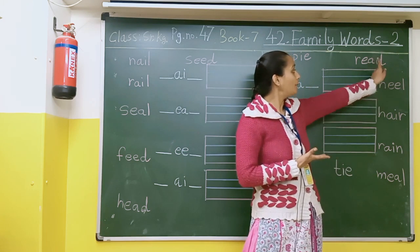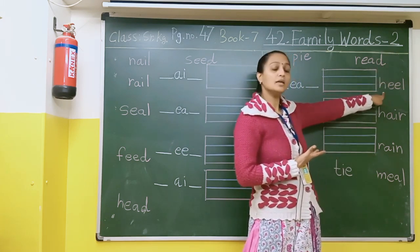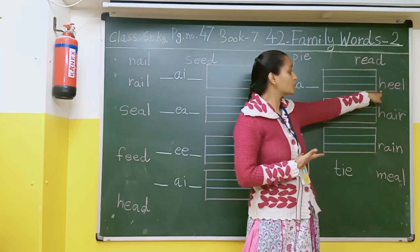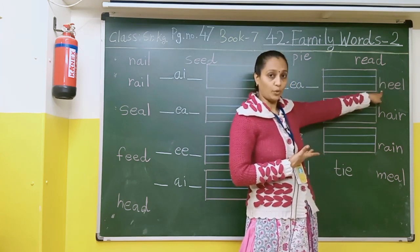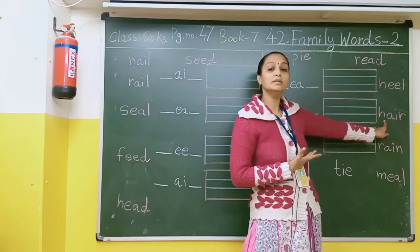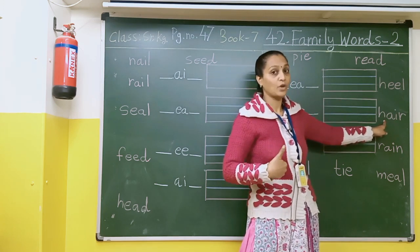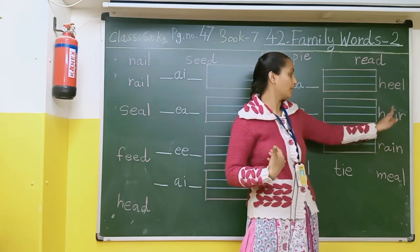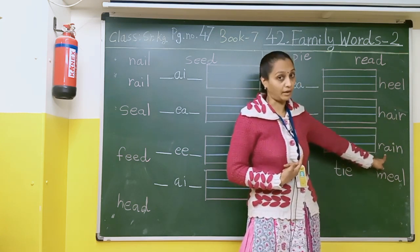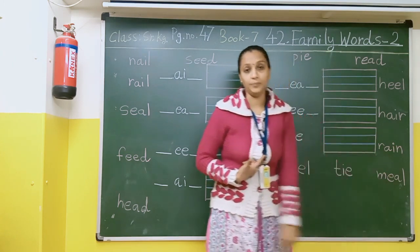After that, here there is an image of a girl — uske neeche kya dikha hai? Heel dikha hai, eedi dikha hai. After that, here there is an image of a girl — uske kya dikha hai? Head dikha hai. Long hair hai uske, baal dikha hai. After that, here there is an image of rain — R-A-I-N, rain yaani baarish dikha hai.